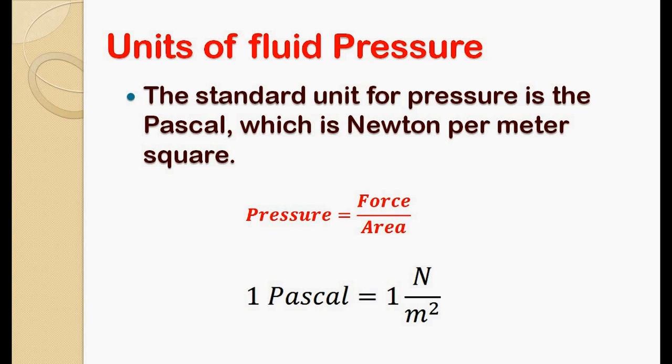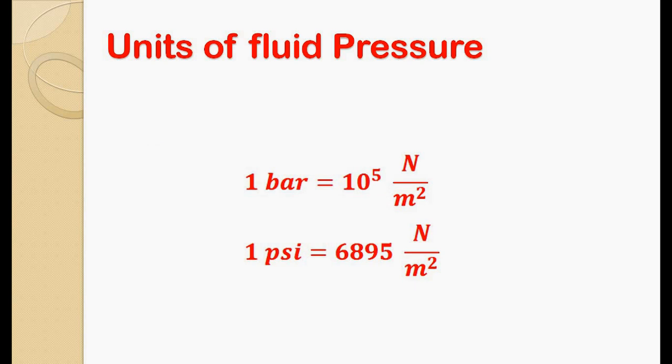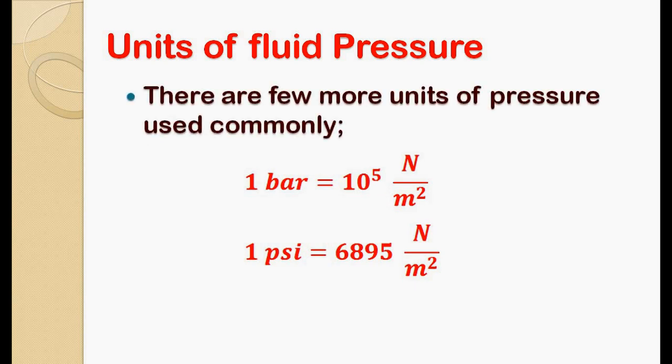There are few more units of pressure which are used commonly: bar and psi. 1 bar is equal to 10 raise to 5 Newton per meter square, and 1 psi is equal to 6895 Newton per meter square.